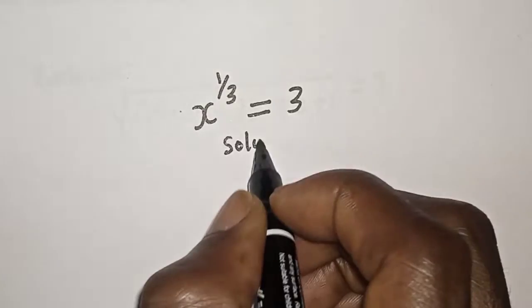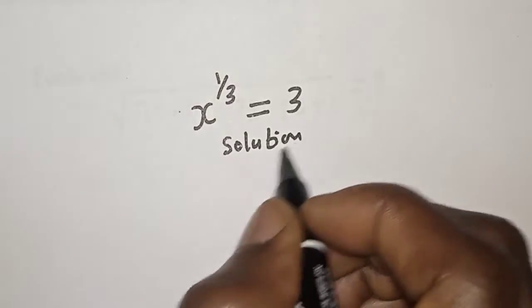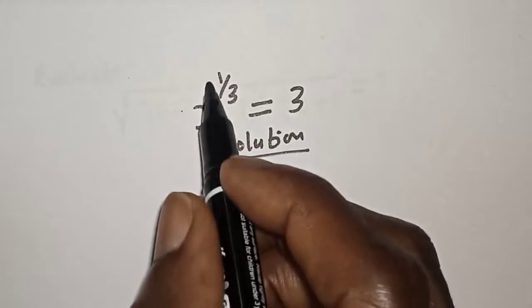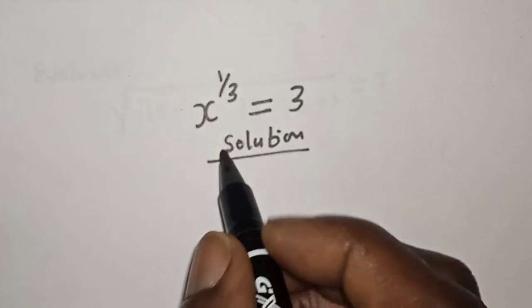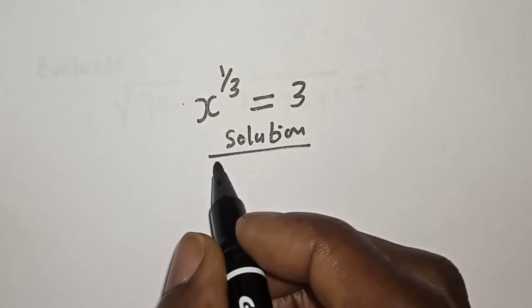Solution. We have x raised to power 1 over 3 is equal to 3. Let's take the power of both sides by 3.